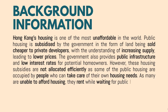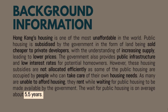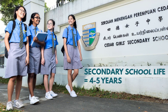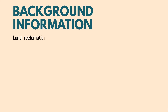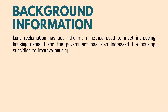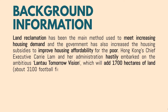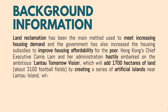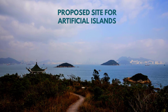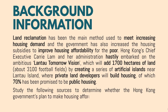The government also provides public infrastructure and low interest rates for potential homeowners. However, these housing subsidies are not allocated efficiently, as some of the public housing is occupied by people who can take care of their own housing needs. As many are unable to afford housing, they rent while waiting for public housing to be made available by the government. The wait for public housing is on average about 5.5 years, which is extremely long — Singapore, you would have finished your secondary school education by then. Land reclamation has been the main method used to meet increasing housing demands. Hong Kong Chief Executive Carrie Lam embarked on the ambitious Lantau Tomorrow Vision, which will add 1,700 hectares of land — about 3,100 football fields — by creating a series of artificial islands near Lantau Island, where 70% has been promised to be public housing.